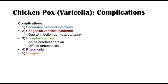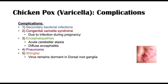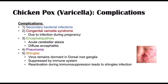Shingles is something we think about often later in life. Shingles can occur when an individual becomes older and immunocompromised. The varicella zoster virus remains dormant in dorsal root ganglia, suppressed by the immune system. Even if you clear the chickenpox virus, it remains dormant in the dorsal root ganglia. It becomes reactivated during immunosuppression, whether due to age or other factors.